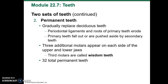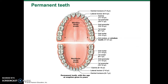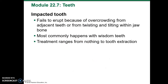Then you get your permanent teeth, which gradually replace the deciduous teeth. The periodontal ligaments and roots of the primary teeth erode; the primary teeth fall out or are pushed aside by the secondary teeth. Three additional molars appear on each side of the upper and lower jaws; the third molars are called wisdom teeth. There are 32 total permanent teeth. Teeth can become impacted when they fail to erupt due to overcrowding from adjacent teeth or from twisting and tilting in the jawbone — most commonly the wisdom teeth. Treatment ranges from nothing to extraction.